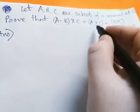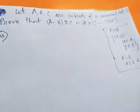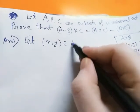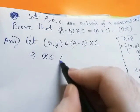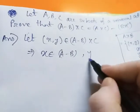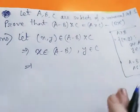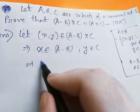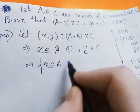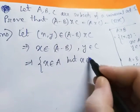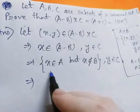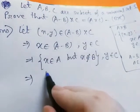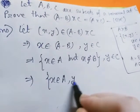First, we show (A minus B) cross C is a subset of (A cross C) minus (B cross C). Let ordered pair (x, y) belong to (A minus B) cross C. This implies x belongs to A minus B and y belongs to C. By definition of difference of two sets, x belongs to A but x does not belong to B, and y belongs to C.